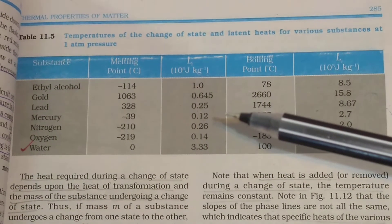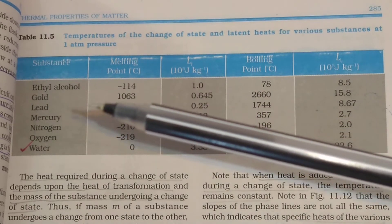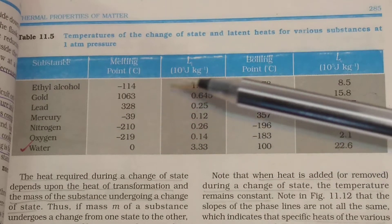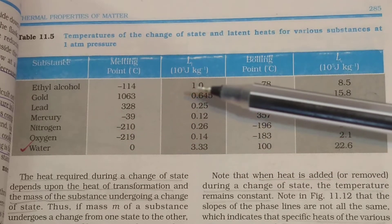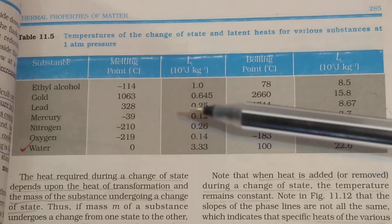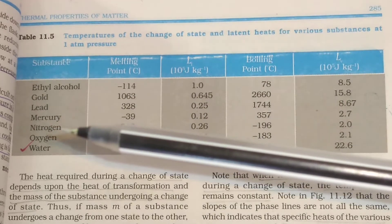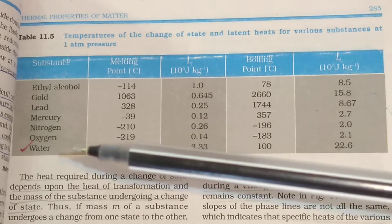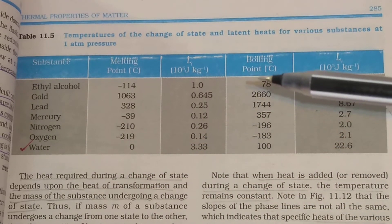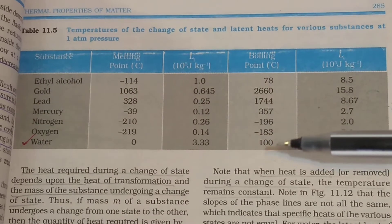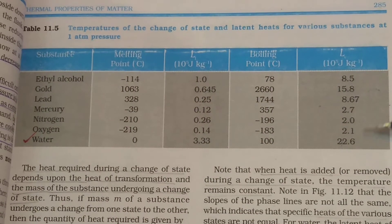This table shows the melting point and boiling point of different substances, along with the latent heat of fusion and latent heat of vaporization. Substances listed include ethyl alcohol, gold, lead, mercury, nitrogen, oxygen, and water.